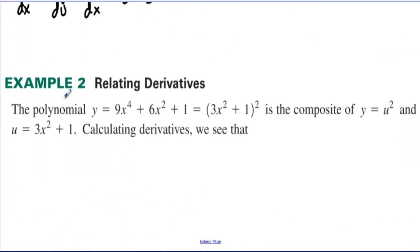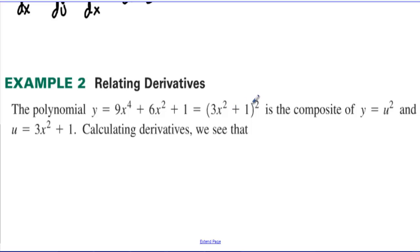Example 2: The polynomial y equals 9x to the fourth plus 6x squared plus 1 can be factored into 3x squared plus 1, all squared. This is a composite of y equals u squared and u equals 3x squared plus 1. The 3x squared plus 1 is the inside function, and the outside function is u squared.